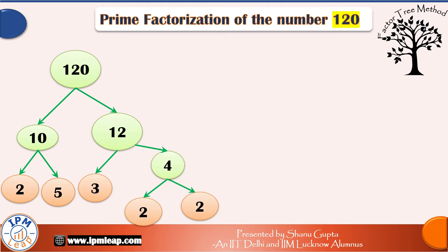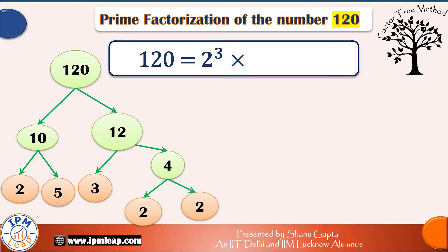Now we can see that the numbers at the end nodes, the orange ones are all primes. So clubbing them all, 120 can be written as 2 raised power of 3 into 3 raised power of 1 into 5 raised power of 1.